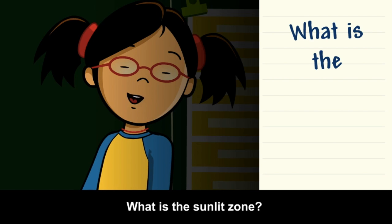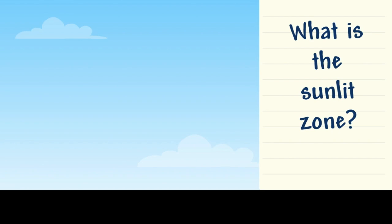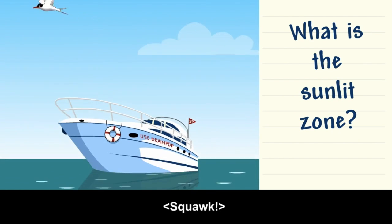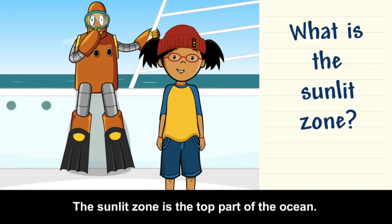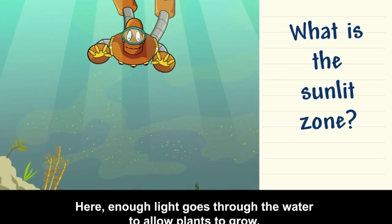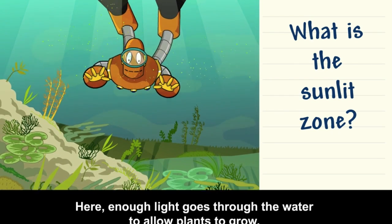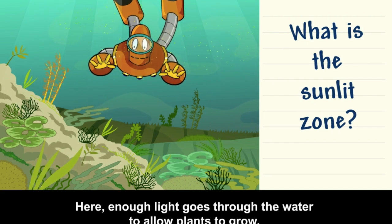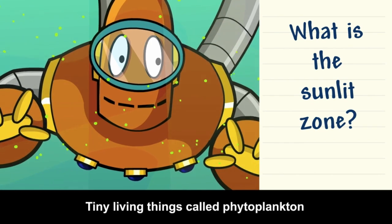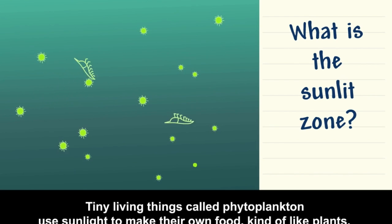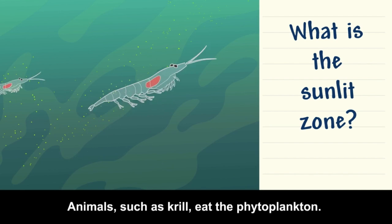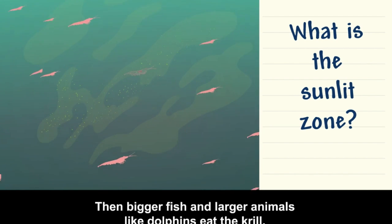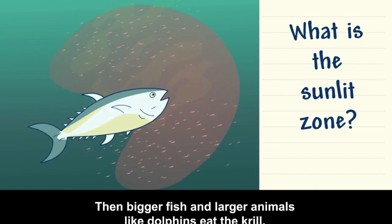What is the sunlit zone? The sunlit zone is the top part of the ocean, where enough light goes through the water to allow plants to grow. Tiny living things called phytoplankton use sunlight to make their own food, kind of like plants. Animals such as krill eat the phytoplankton, then bigger fish and larger animals like dolphins eat the krill.